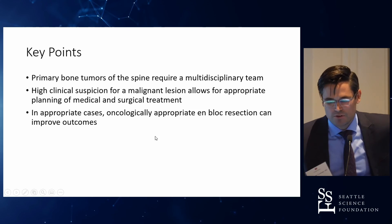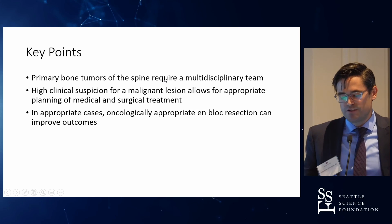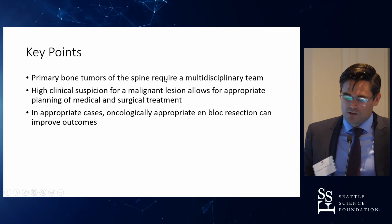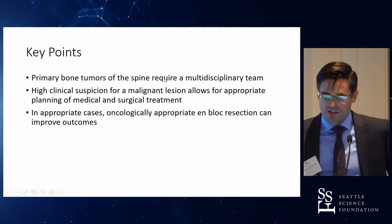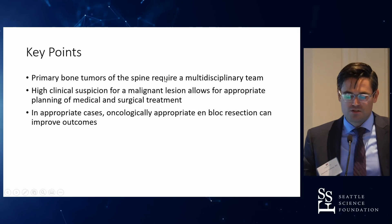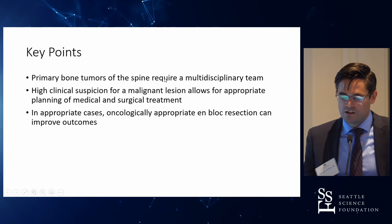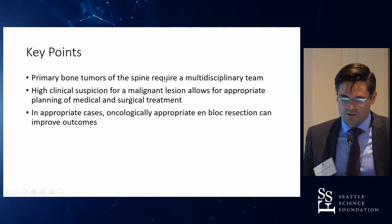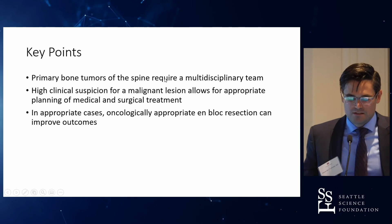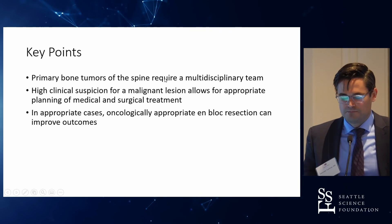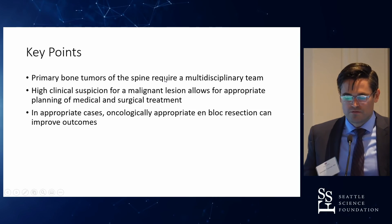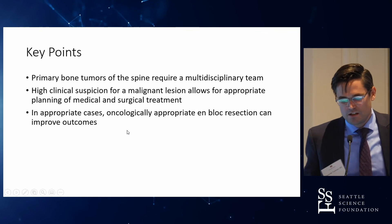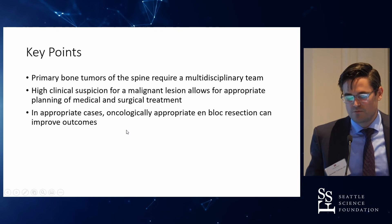The key points: primary bone tumors in the spine require a multidisciplinary team. As soon as your index of suspicion is high, going to a medical center with a team of radiation oncologists and surgeons working in concert to develop the best plan aligned with patient and surgical team goals is critical. And in appropriate cases, en bloc resection for specific tumors can improve outcomes.